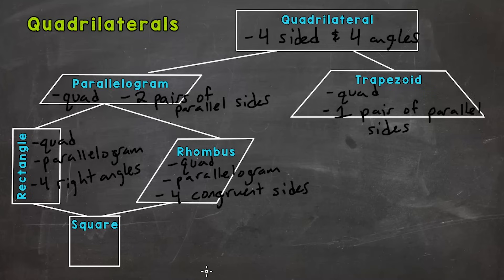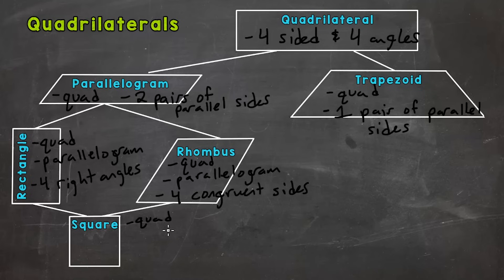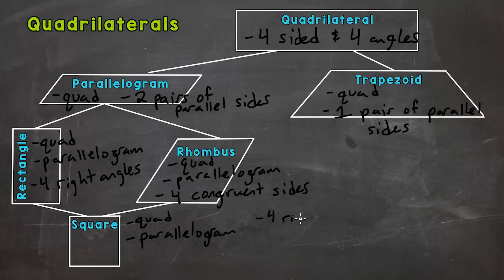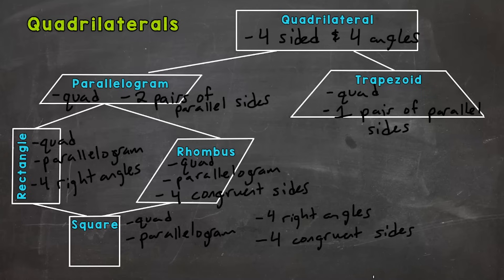The most specific quadrilateral of all is the square. A square basically combines everything on the left side of the screen — the parallelogram, the rectangle, and the rhombus. So a square is a quadrilateral; it is a parallelogram with two pairs of parallel sides; it is a rectangle with four right angles; and it also takes on the characteristic of a rhombus — it has four congruent sides.